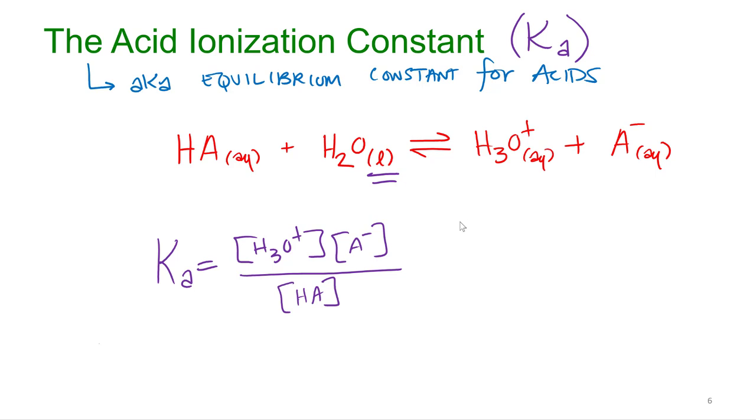So it actually turns out, when we're talking about acid strength, the more hydronium you make, the more products you make, the stronger the acid is. That's what we would say. The more products you make, the stronger the acid is.